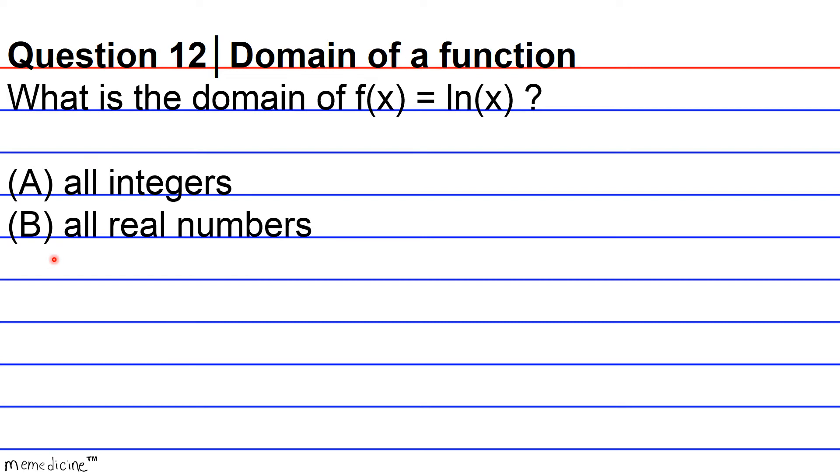Is it going to be answer choice B, all real numbers? Integers are included in the set of all real numbers, as well as rational and irrational numbers. Rational numbers are numbers that can be expressed as fractions, such as one-half, two-thirds, 698 over 750.